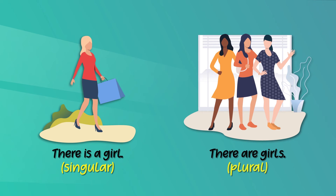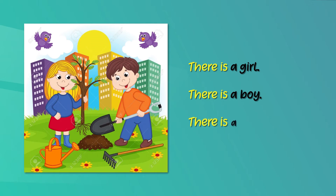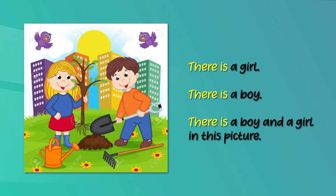Now let's write sentences. We will start with the most important detail. How do we write about the people here? There is a girl and there is a boy — let's combine both and write like this: 'There is a boy and a girl in this picture.'